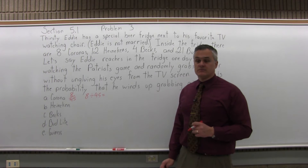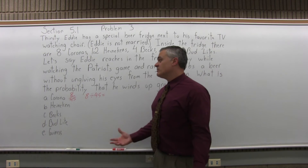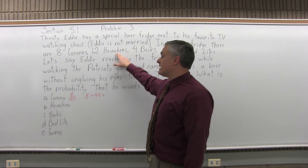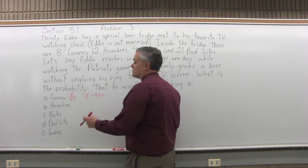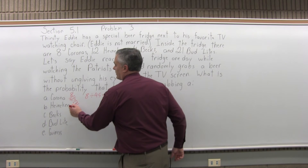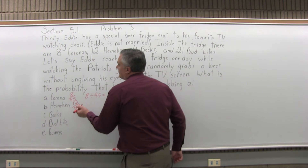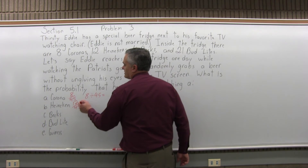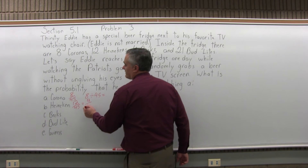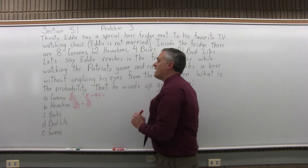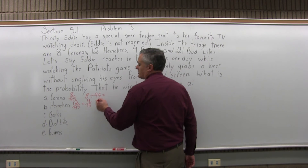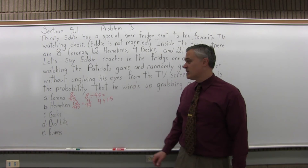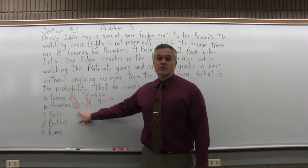Part B, Heineken. What's the probability that the beer he gets without looking is a Heineken? Well, altogether there are 12 Heinekens out of 45 beers total in the fridge, so it would be 12 over 45. That does reduce — you can cut it by 3. 3 goes into 12 four times and 3 goes into 45 fifteen times, giving 4 over 15. You can also turn it into a decimal or percent, but you can just stop at 12 over 45 if you like.